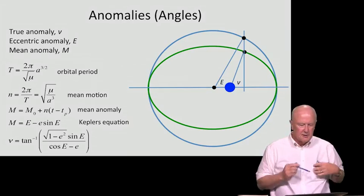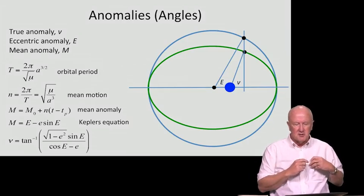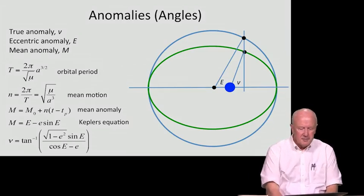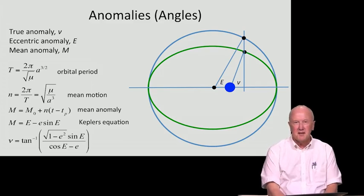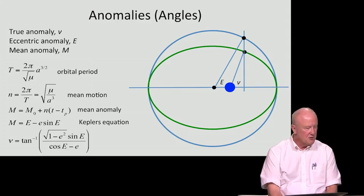This view graph shows the so-called anomalies, which is ancient language equivalent to angles. In fact, there are three anomalies of interest to GPS which you must use to process the data: the true anomaly, the eccentric anomaly, and the mean anomaly.